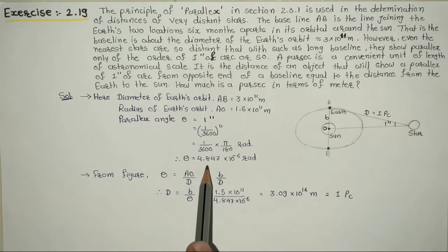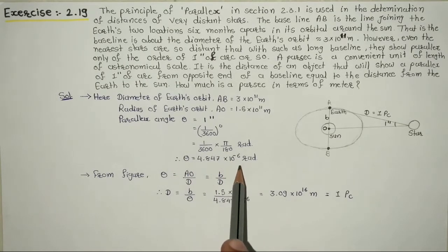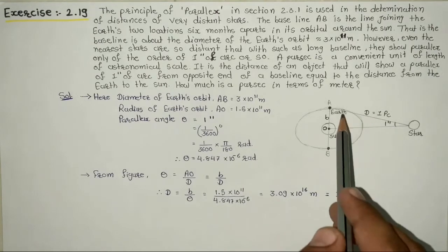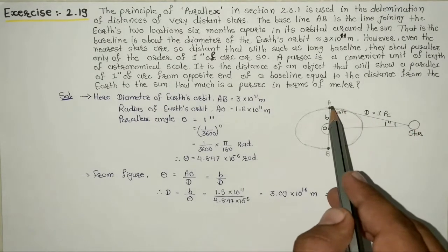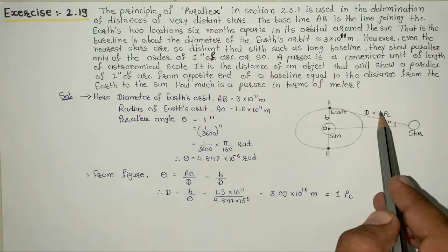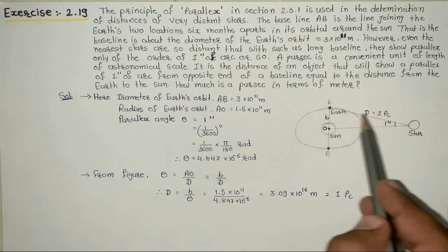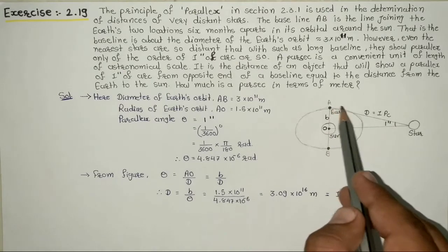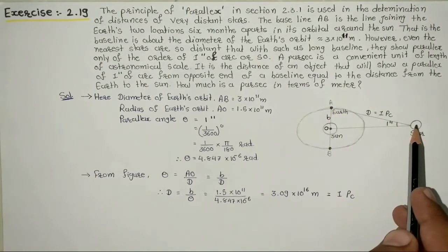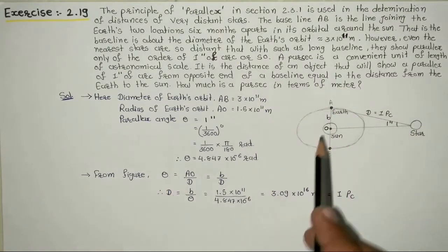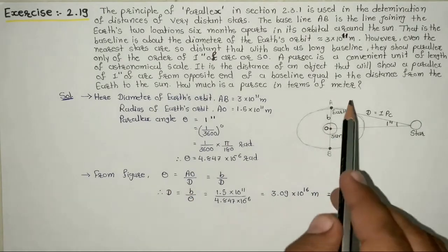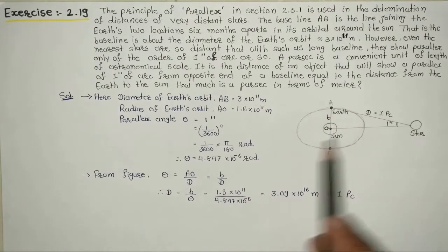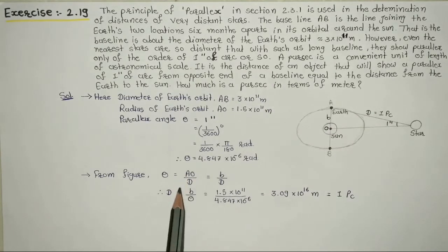Here we need to find the value of d, the value of one parsec in meters. Using the plane angle equation, angle theta equals arc upon radius. That means theta equals arc AO divided by radius d. AO means small b, so the equation becomes b upon d.